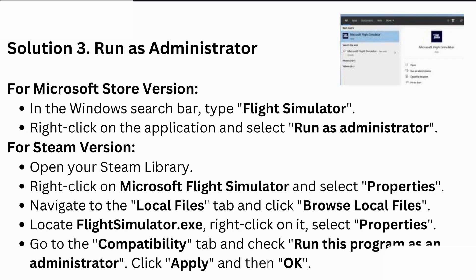You can also try running the game as administrator. For the Microsoft Store version, type 'Flight Simulator' in the Windows search bar, right-click the application, and select 'Run as Administrator'. For the Steam version, open your Steam library, right-click on Microsoft Flight Simulator, select 'Properties', navigate to the 'Local Files' tab, click 'Browse Local Files', locate FlightSimulator.exe, right-click it, select 'Properties', go to the 'Compatibility' tab, and check 'Run this program as an administrator'. Click Apply to save the changes.